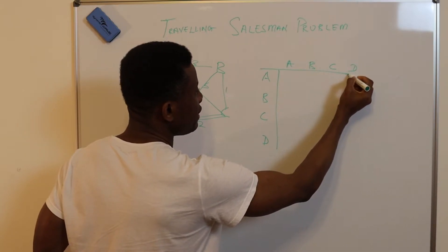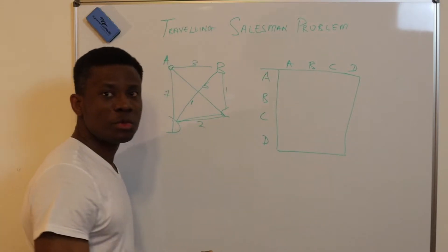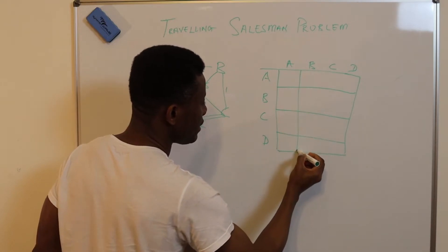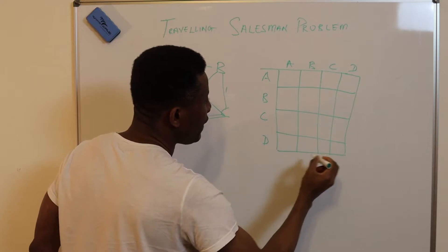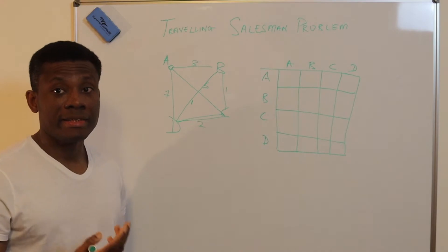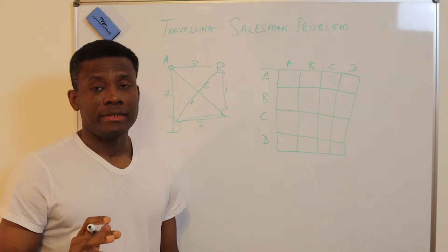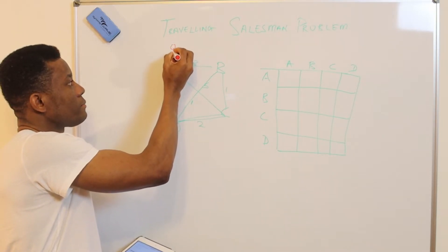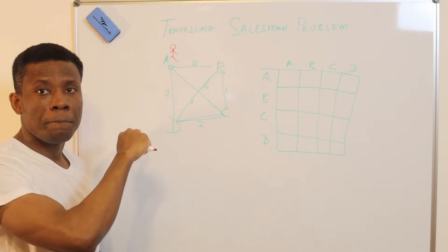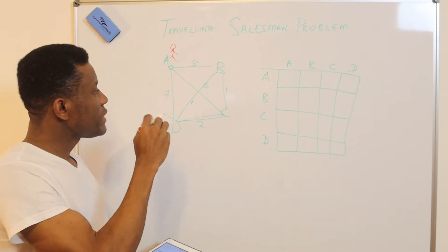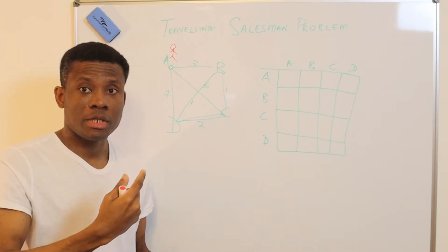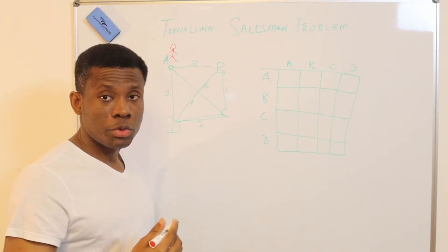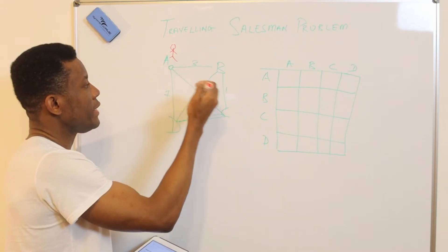Once you have any Traveling Salesman Problem, you have to represent it this way. The salesman starts from a point — let's say he starts from A — and delivers items to B, C, and D, then comes back to A. What is the shortest path considering the distances or cost? From A to A is zero, and from A to B is three.